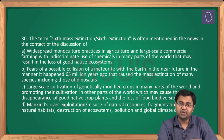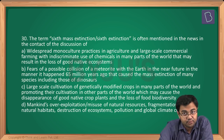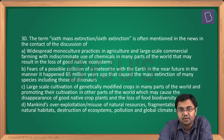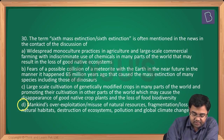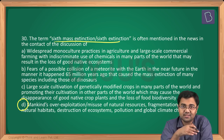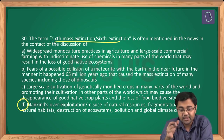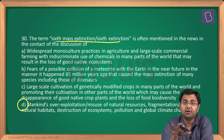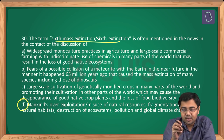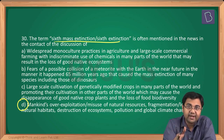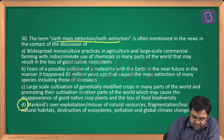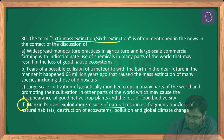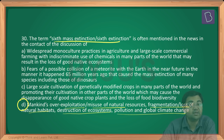Question number 30: a straightforward current affairs question that has been discussed for 10–15 years. The correct answer is D — the 6th mass extinction. There have been 5 mass extinctions in the past; the 6th is predicted and would occur mainly due to anthropogenic factors including overpopulation, resource depletion, pollution, habitat loss, ecosystem destruction and global climate change.